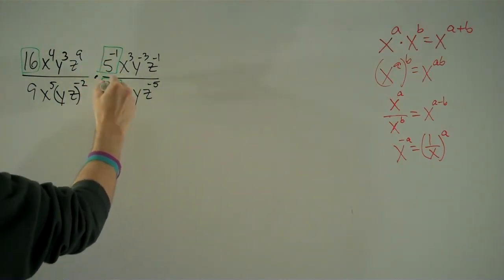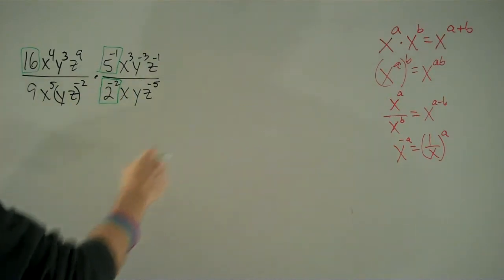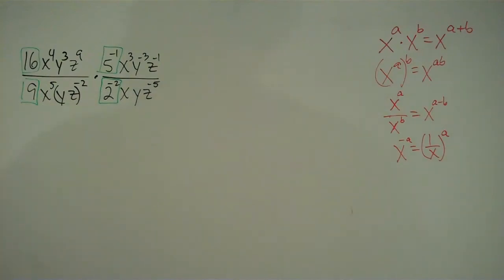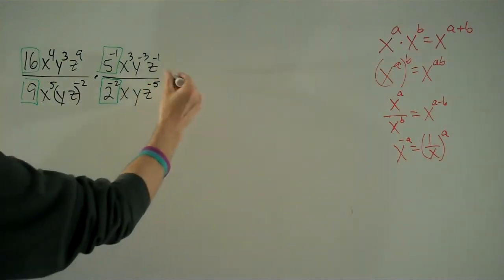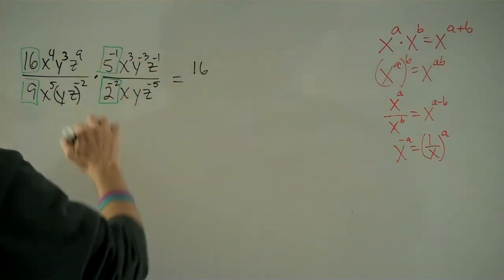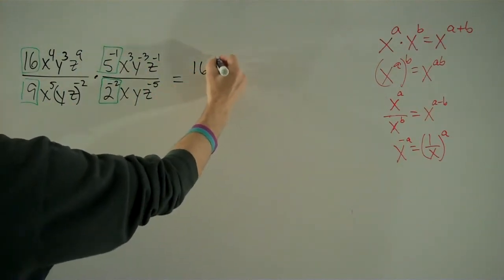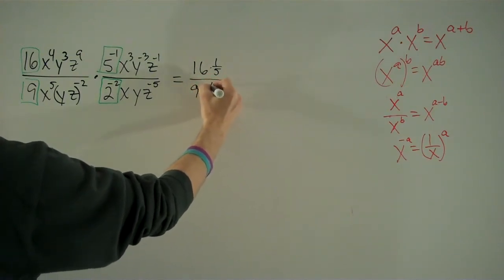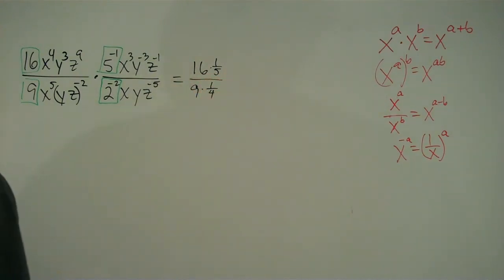We've got 2 to the negative 2, which we know to be 1 over 2 squared, that's 1 fourth. We've got 9 here. So let's just rewrite this and say, this is 16, and we'll deal with the variables in just a second, 16 times 1 fifth over 9 times 1 fourth.